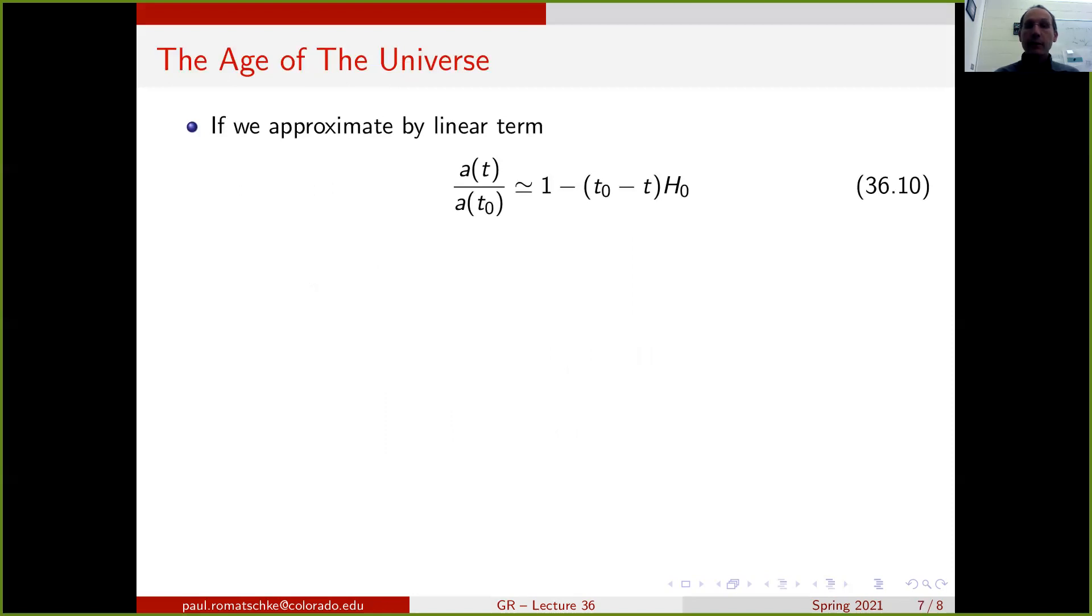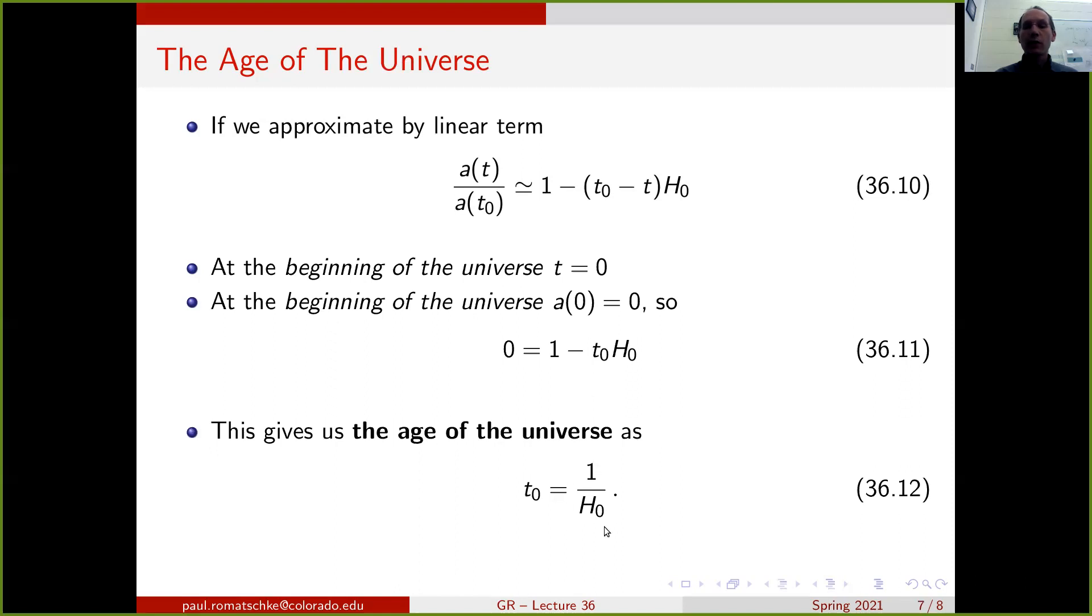We can get some approximate ideas of the age of the universe from this. In particular, if we just ignore the acceleration parameter for now and just include the linear term in the Taylor expansion, then we get for this ratio just 1 minus (t0 - t)h0. If we then say we want to put the beginning of the universe at time t equals 0 and we define the beginning of the universe by that point where the scale parameter a(t) is equal to 0, we find that the corresponding approximation leads us to the following equation: a(t)/a(t0) equals 1 minus t0 h0, or t0 is just 1 over h0. Since t0 is the time today, this means that the age of the universe today is given as the inverse of the Hubble parameter. This approximation of this time is also known as the Hubble time.